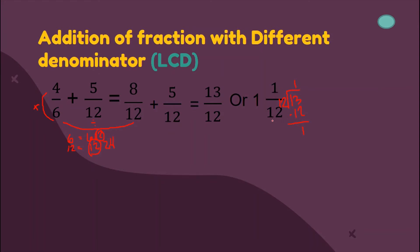Where do I get this answer? Our quotient 1 will become our whole number. Our 12 here will become our denominator. And for our remainder, it will become our numerator.